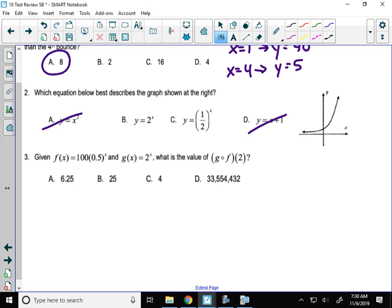Exponential has an x in the exponent like B and C. Since the graph is exponential growth, I need a growth rate that's greater than 1, which would be option B.